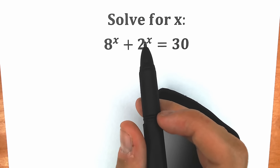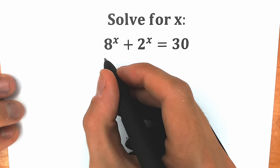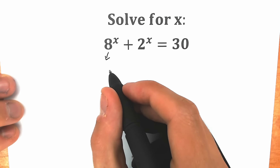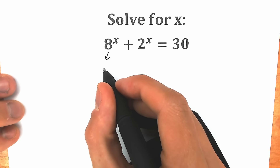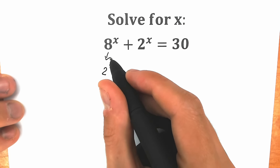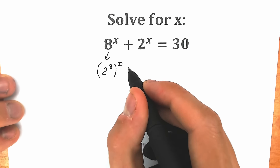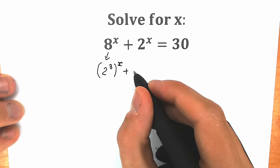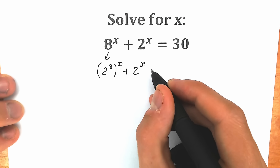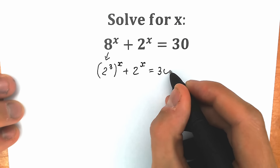It changed nothing, but it helps us a lot. So instead of this 8 on the left side, let's write 2 cubed, and we need to raise this to the power x — don't forget about this. Plus, we have 2 to the power x, so absolutely the same expression, and equal to 30.